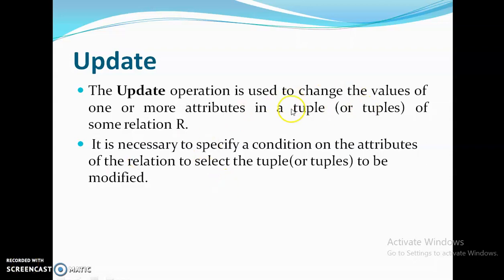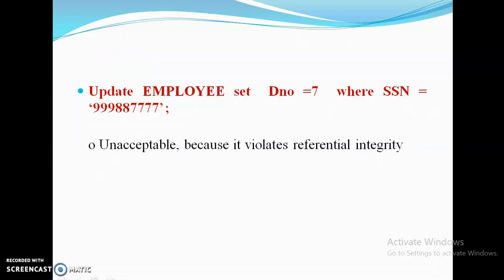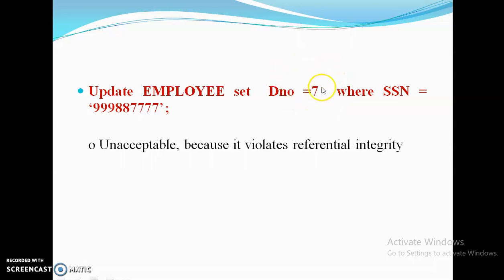The UPDATE operation is used to change the values of one or more attributes in a tuple of some relation R. Here also we need a condition for selecting a particular tuple to be modified. For example: UPDATE employee SET d_number = 7 WHERE ssn = '999887777'. This is not acceptable because d_number = 7 is not in the master table — the master table has only values 5, 4, and 1.